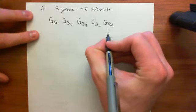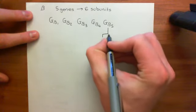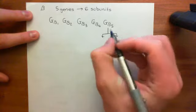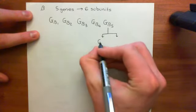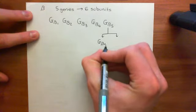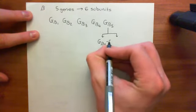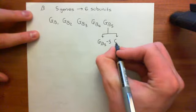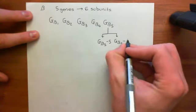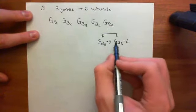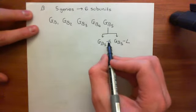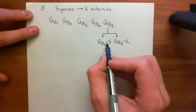Meanwhile, G-beta-5 has two separate splice variants, so it can make two different proteins. This takes us up to six different beta subunits. It can make the G-beta-5 subunit and also the G-beta-5-L subunit. That now gives us six separate beta subunits that you can use when making a heterotrimeric G protein.